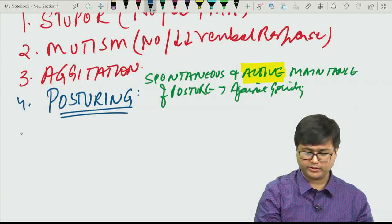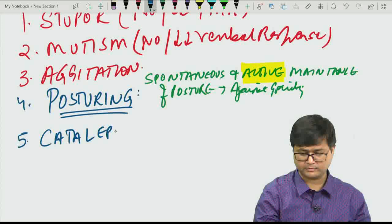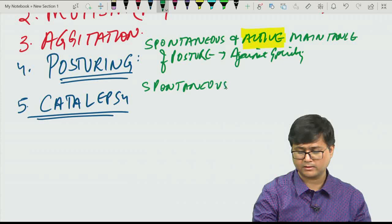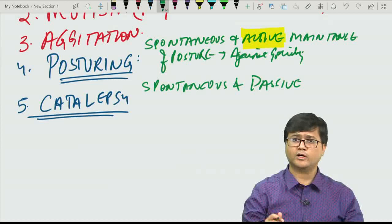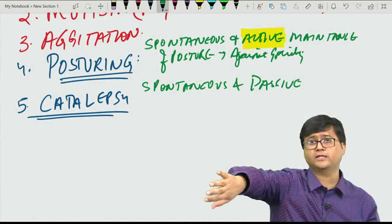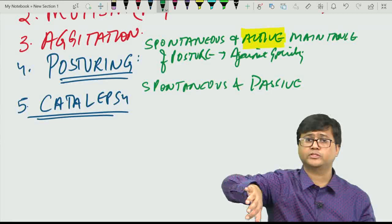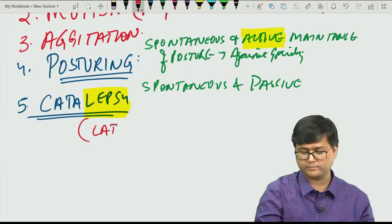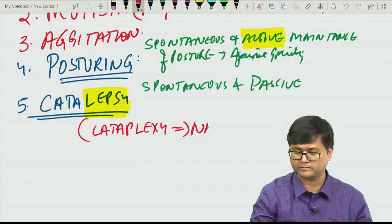Similar to posturing is catalepsy — here there is spontaneous and passive maintenance of a posture held against gravity. If an examiner places the patient's hand in a position, the patient will maintain that posture for a long duration. Important to distinguish: catalepsy is seen in catatonia, while cataplexy is seen in narcolepsy.